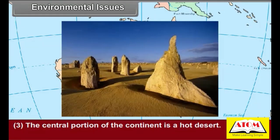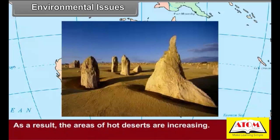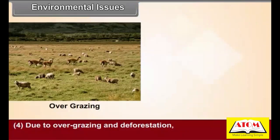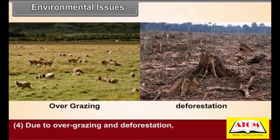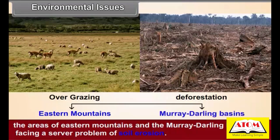The central portion of the continent is a hot desert. Sand from these deserts is blown by wind to the peripheral regions and deposited there, causing the areas of hot deserts to expand. Due to overgrazing and deforestation, the areas of eastern mountains and the Murray-Darling basin are facing a severe problem of soil erosion.